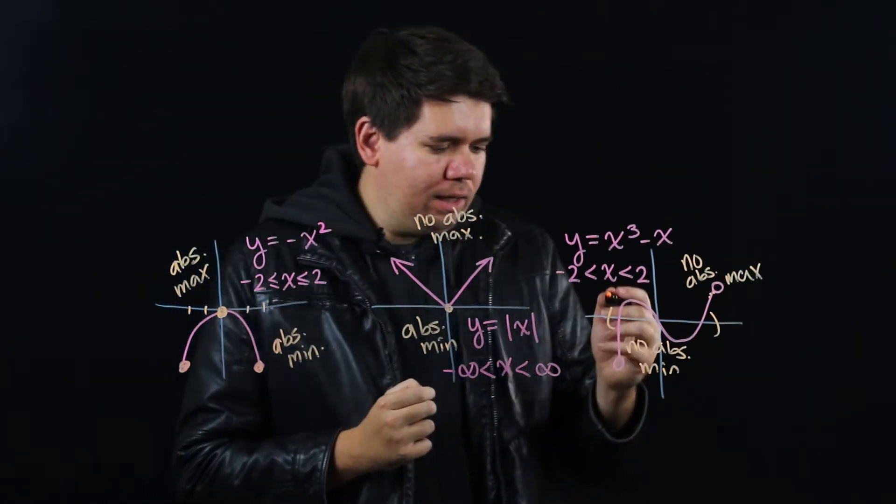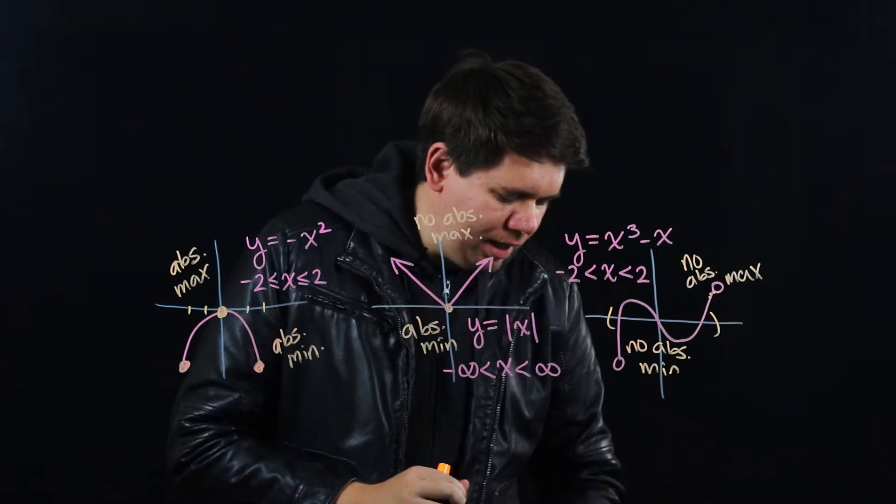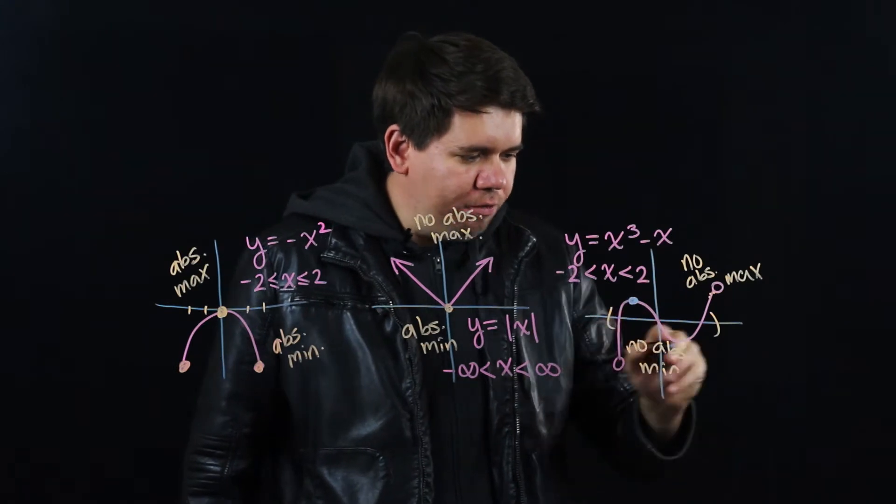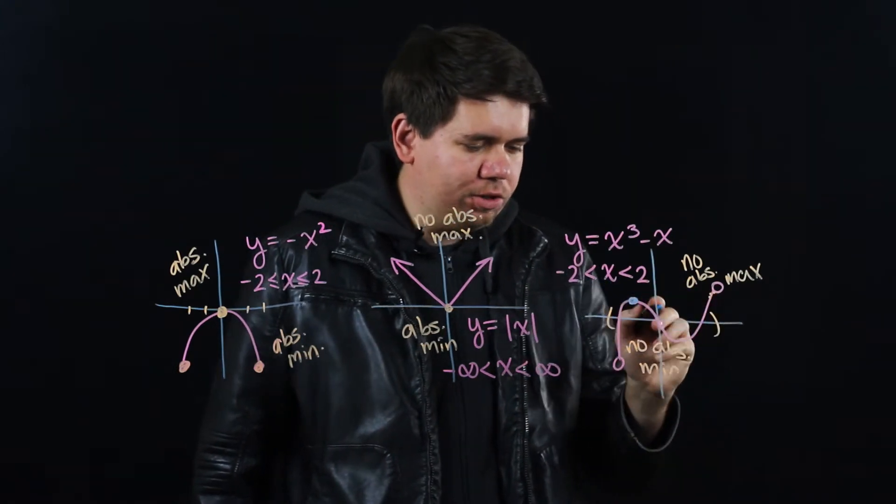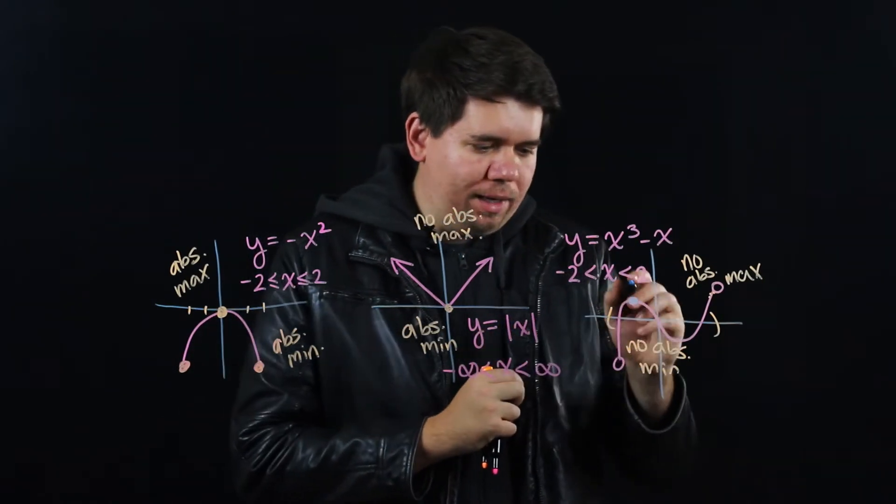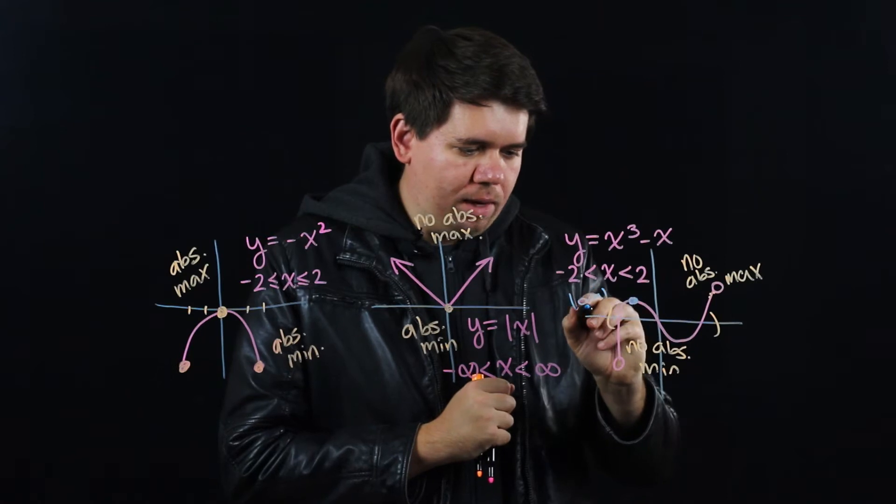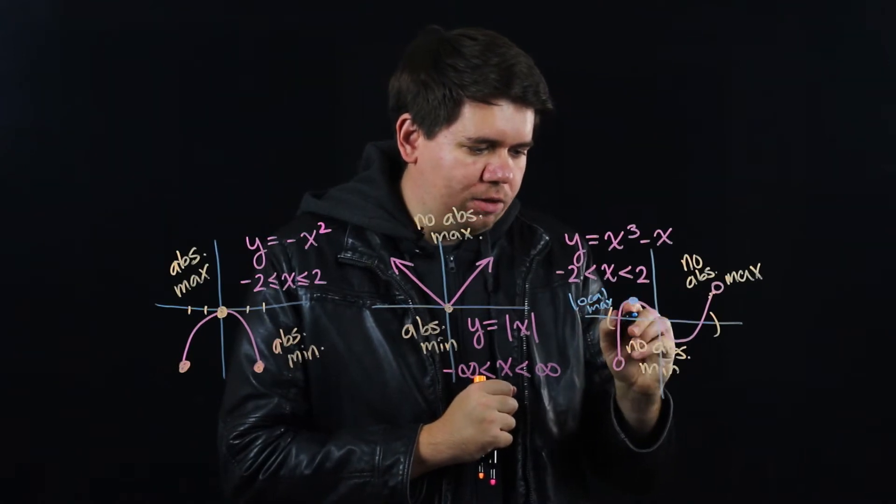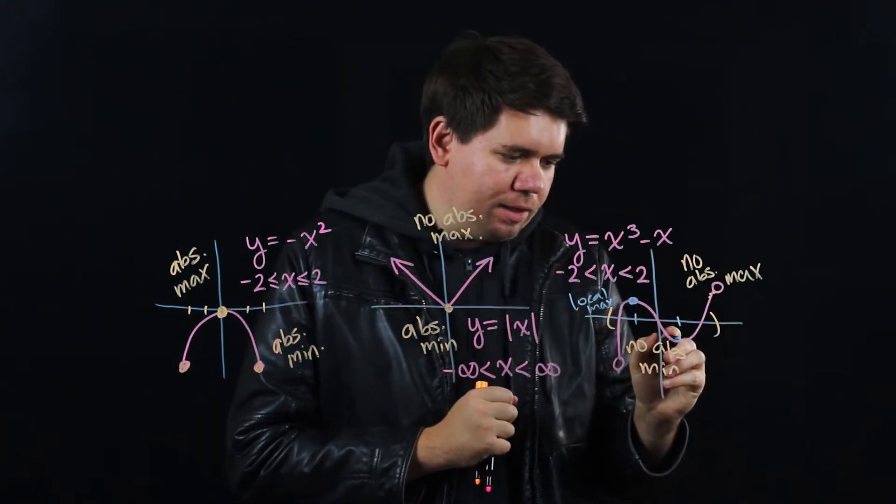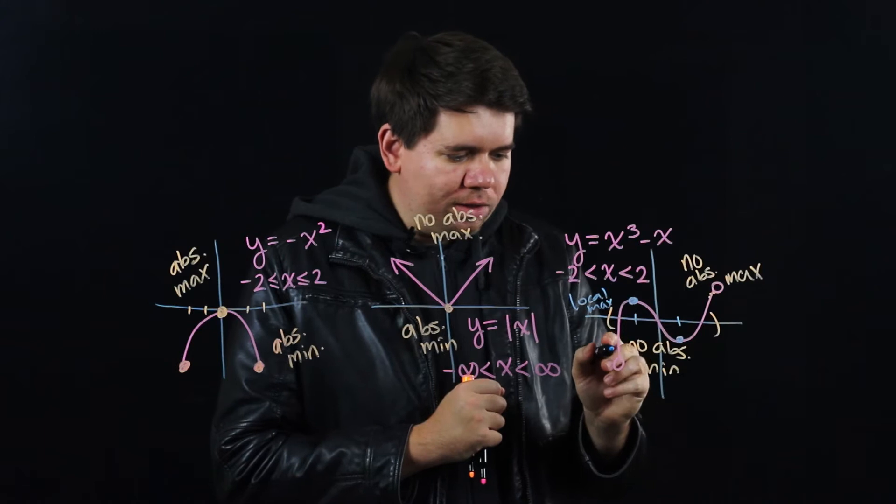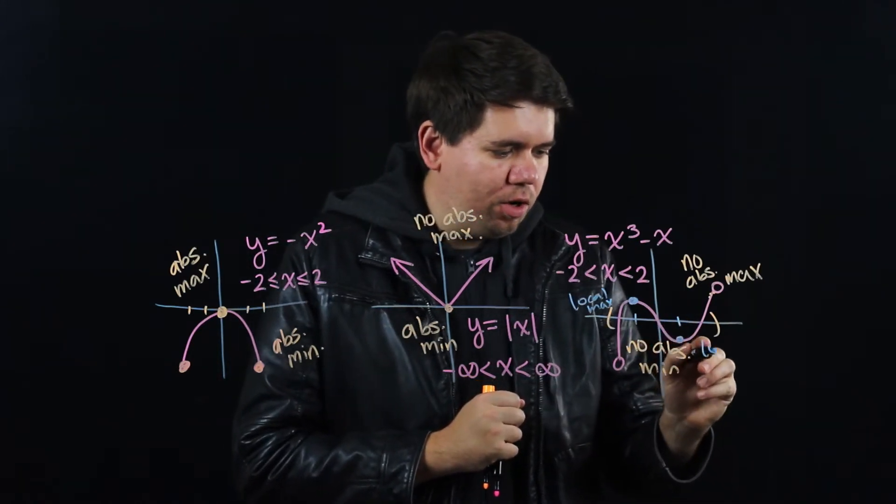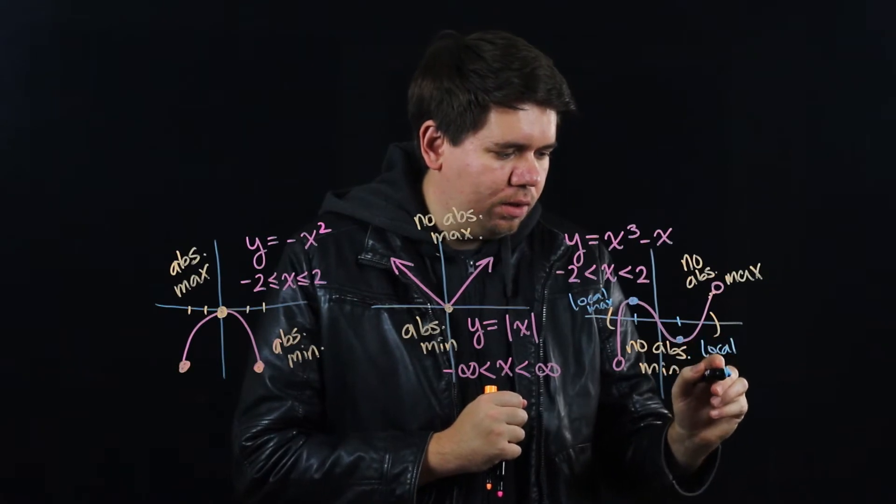However, you do have some other points. Like for example, right here we have this point and that seems kind of special. It's not the largest point everywhere because over here there are points that are larger. But it's the largest point locally. We call this a local maximum at x equals negative 1. And in a similar way, at x equals positive 1, you're not at the lowest point overall, but locally you're at the lowest point. So we call this a local minimum.